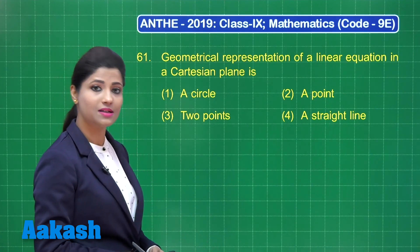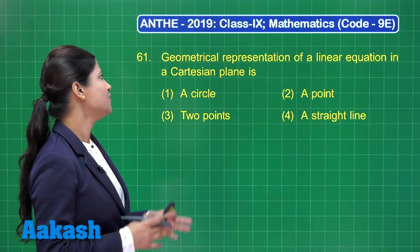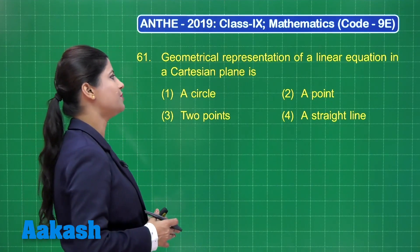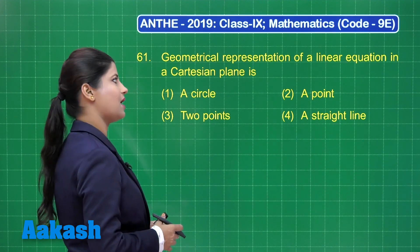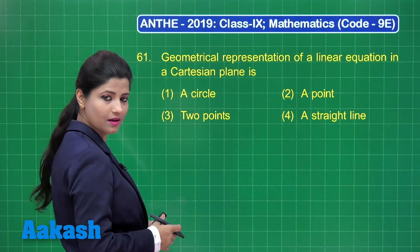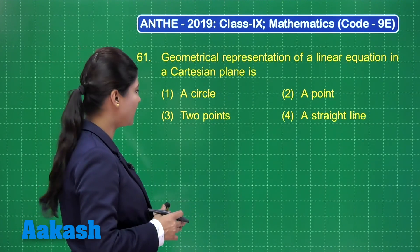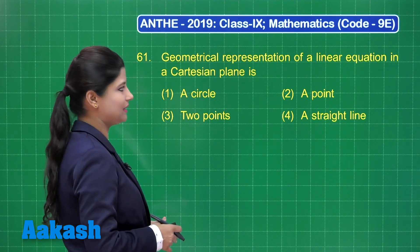Question number 61 states that the geometrical representation of a linear equation in a Cartesian plane is: a circle, a point, two points, or a straight line.